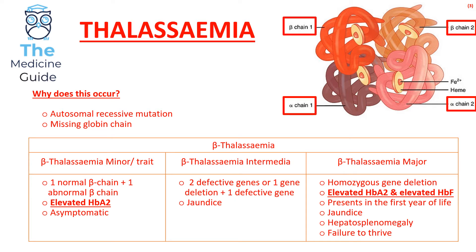Patients could also suffer from beta thalassemia intermediate, where there are two defective genes or one gene deletion and one defective gene — these patients will suffer from jaundice. Finally, beta thalassemia major is a homozygous gene deletion with elevated HbA2 and elevated HbF. In exams you may need to differentiate between the two: beta thalassemia major presents with high HbA2 and high HbF, whereas beta thalassemia minor only presents with elevated HbA2.